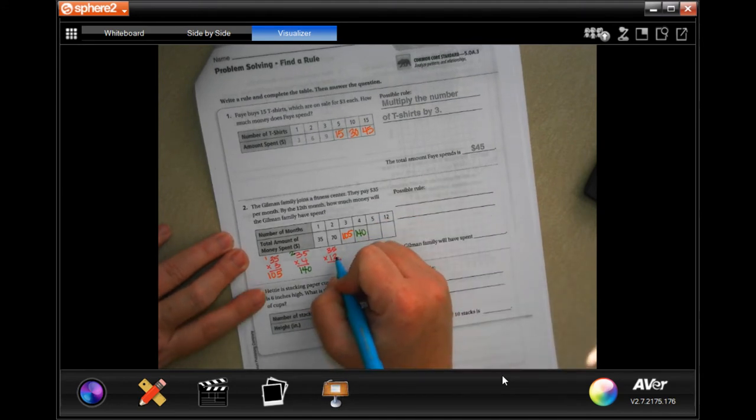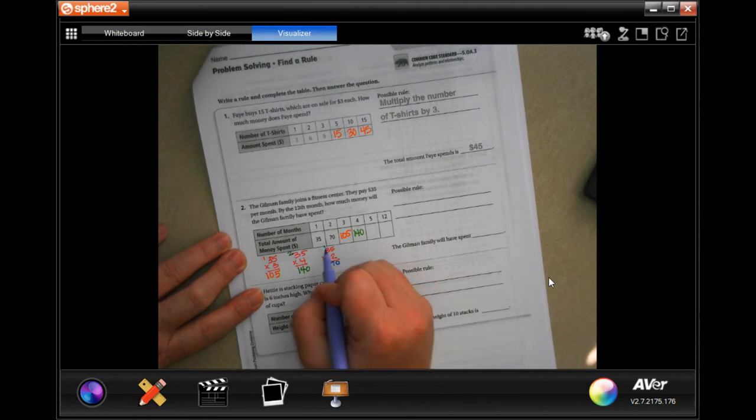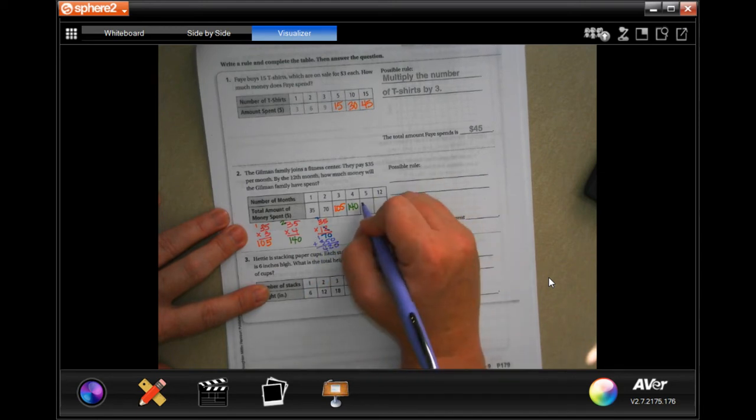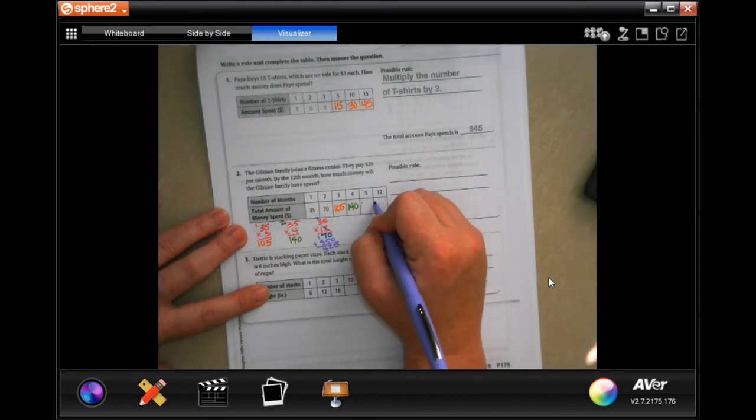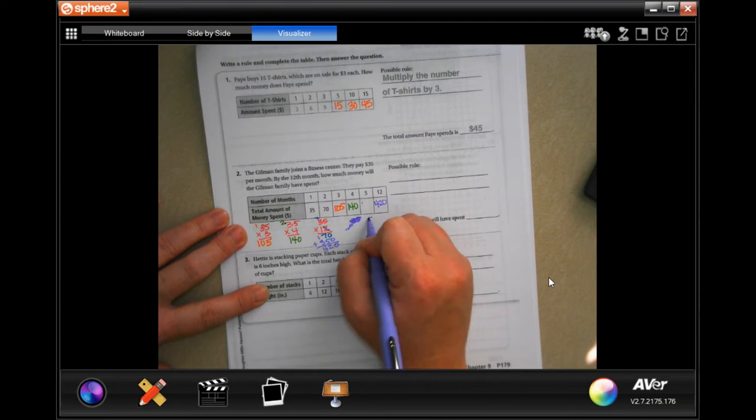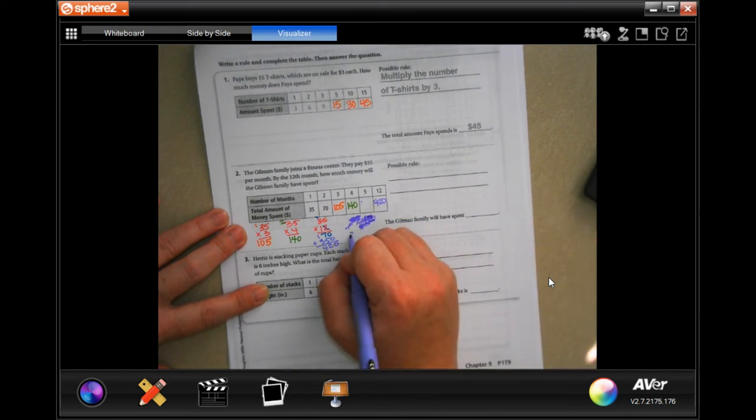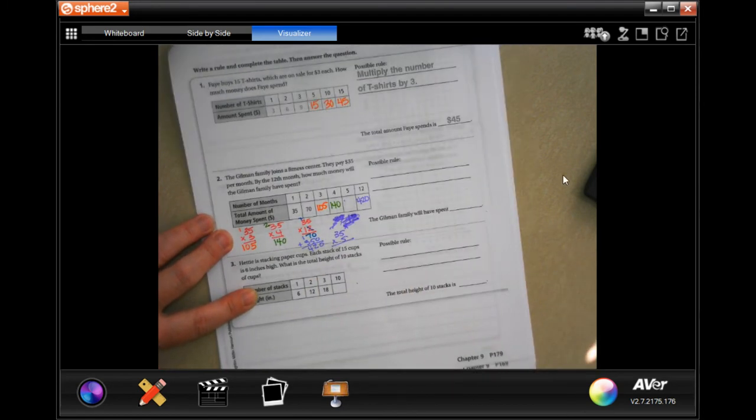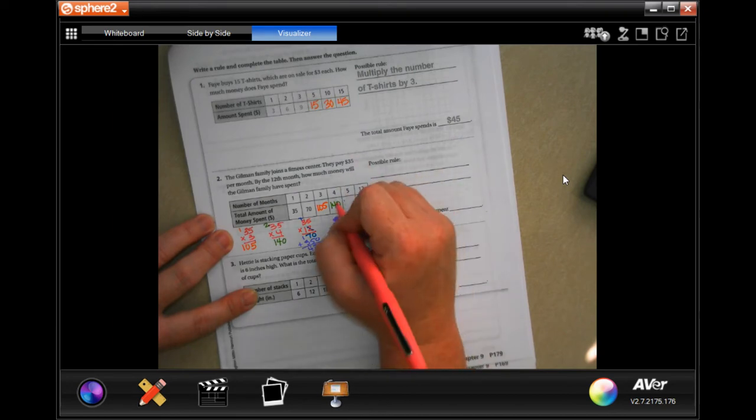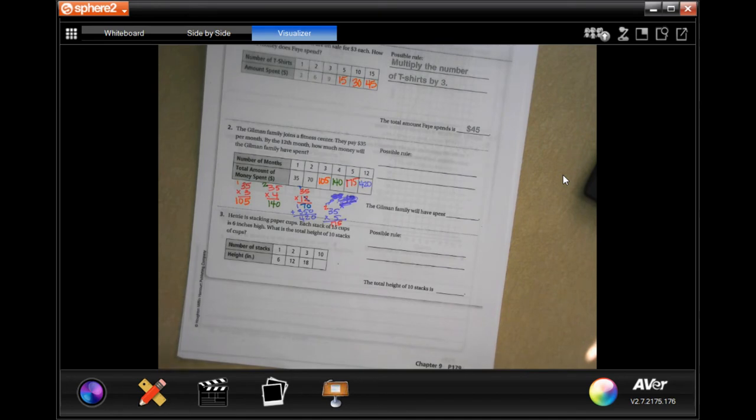2 times 5 is 10, carry the 1. 2 times 3 is 6 plus 1 is 7. Now I need to do 12 times 35, so I'm going to add them up: 0, 12, carry the 1 and 4, so 420. I didn't do 5 yet, so we'll do 5 right now.